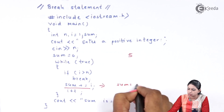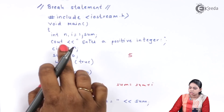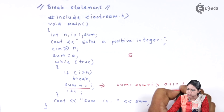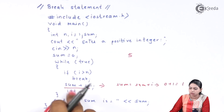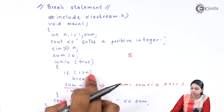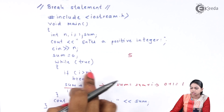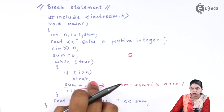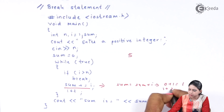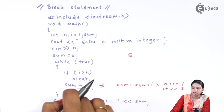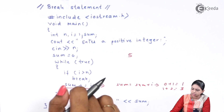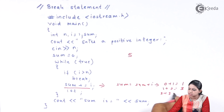Your sum is 0 and i is 1, so 0 + 1 = 1. Then i gets incremented to 2. Is 2 greater than 5? No, so again sum += i: 1 + 2 = 3. Then i becomes 3. Is 3 greater than 5? No, so again 3 + 3 = 6.